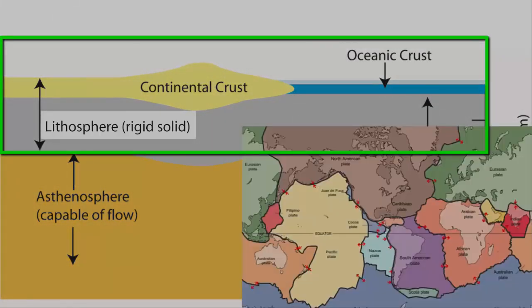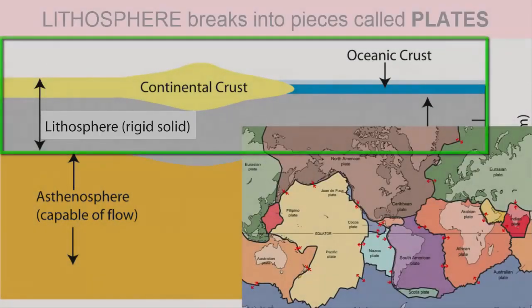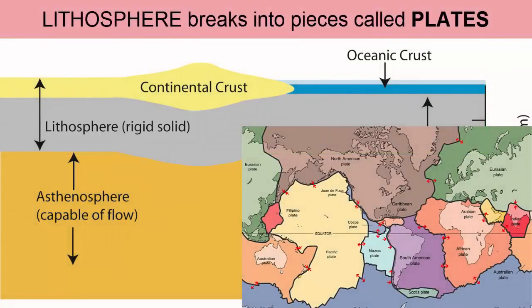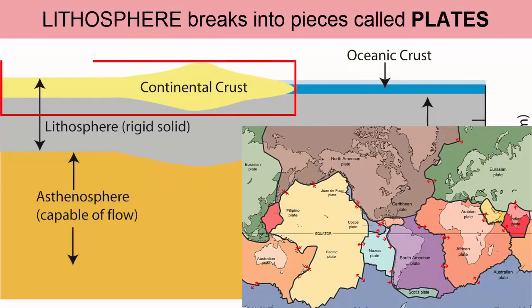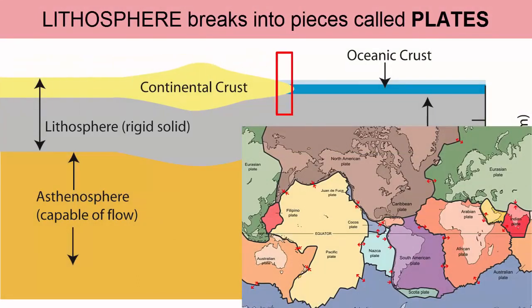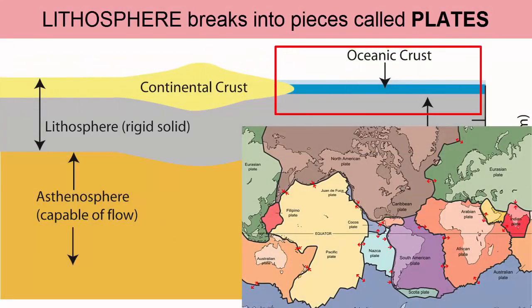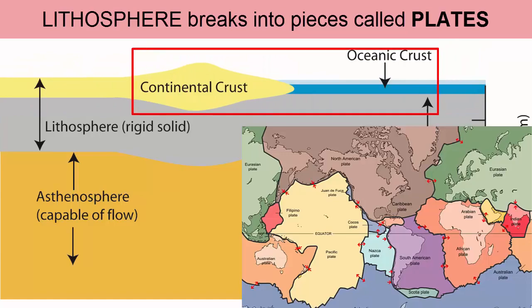The lithosphere is broken up into pieces that we call plates. Some of the pieces contain continental crust, some ocean crust, and some contain both side by side.